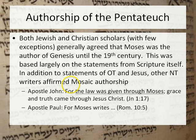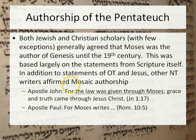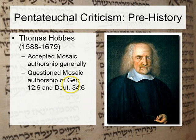When it comes to the authorship of the Pentateuch, both Jewish and Christian scholars, with no more than five exceptions, generally agreed that Moses was the author of Genesis until the 1800s. This was based largely on statements from Scripture itself. In addition to the Old Testament, Jesus and other New Testament writers affirmed Mosaic authorship — the Apostle John says 'the law was given through Moses,' and Paul says in Romans 10:5 'Moses writes,' quoting Leviticus 18:5. That's the conservative background of the first 1,800 years of the church's understanding.